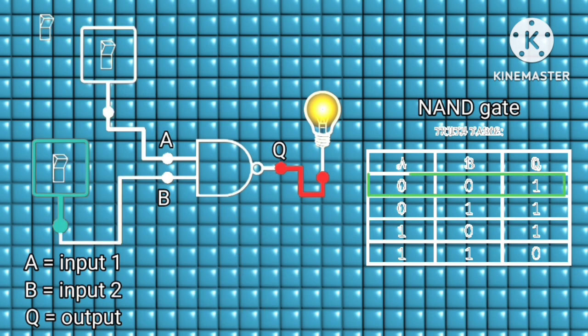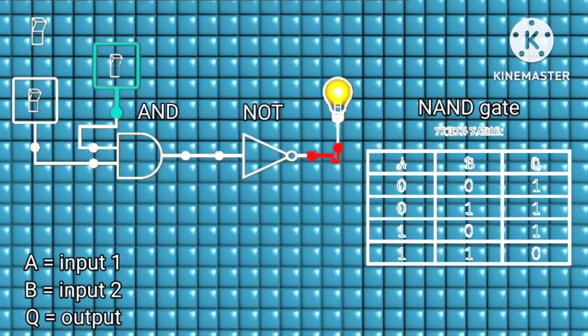But why is that the opposite of the AND gate? It is because of the bubble you see at its output—it inverts the signal, which means it is a combination of AND gate and NOT gate. NOT plus AND equals NAND gate.